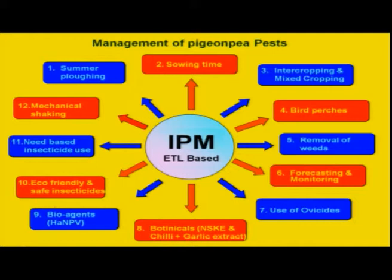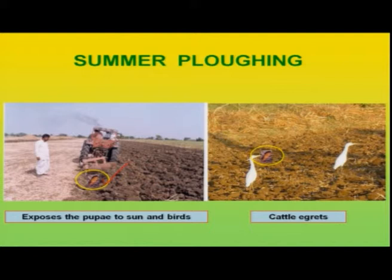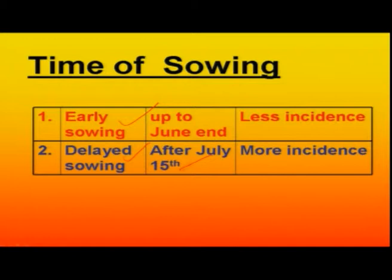The IPM recommended involves 12 components in case of pigeon pea pest, starting from summer plowing. By doing this, we can expose hibernating pupae to high temperature or to predation, whereby the carryover population can be reduced. Timing of sowing is most important — studies have clearly indicated that sowing up to June end gives less incidence in November, whereas any delayed sowing after the 15th of July will lead to higher and higher incidence in November month.